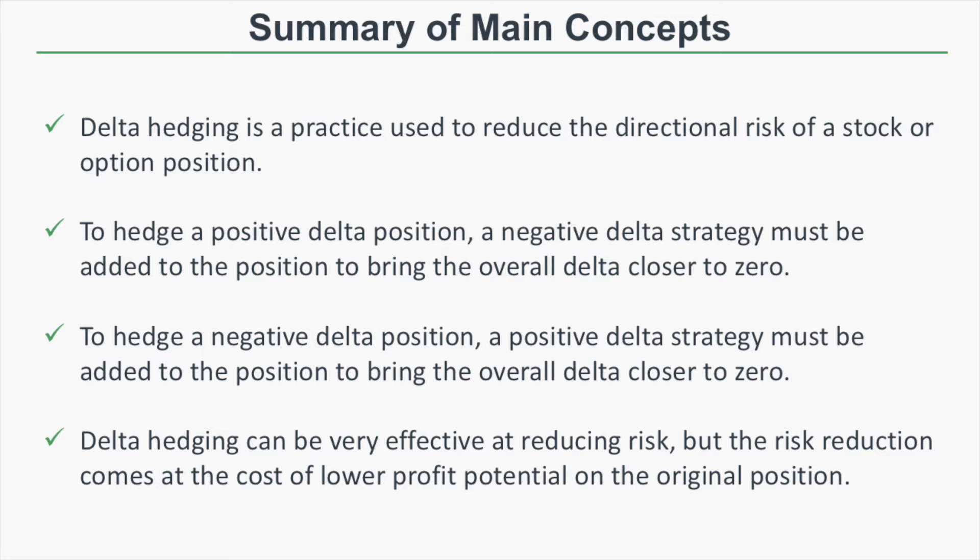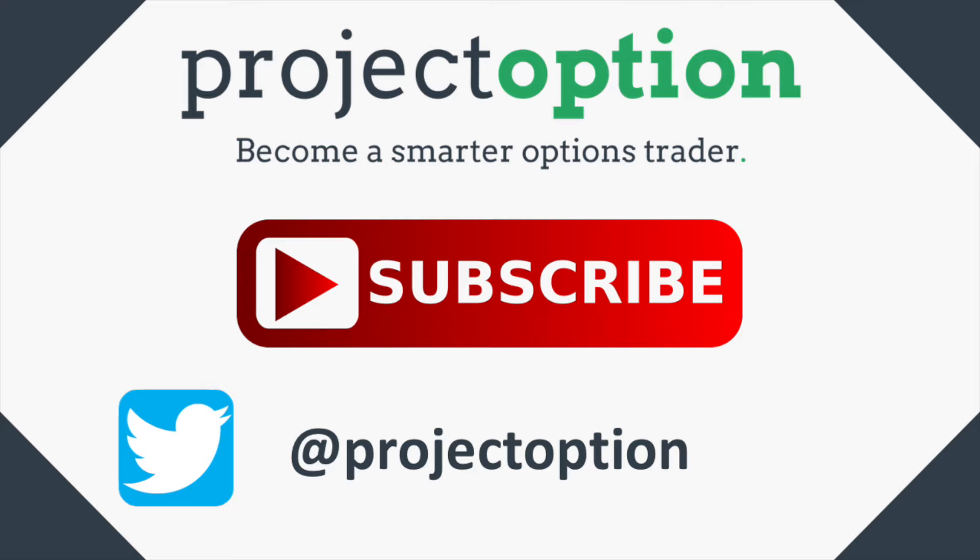That covers the basics of delta hedging. To summarize: delta hedging is a practice used to reduce the directional risk of a stock or option position. To hedge a positive delta position, a negative delta strategy must be added to bring the overall delta closer to zero. The goal when delta hedging is to reduce your deltas and bring the position delta closer to zero. Delta hedging can be very effective at reducing risk, but that reduction in risk comes at the cost of lower profit potential on the original position when it goes your way.